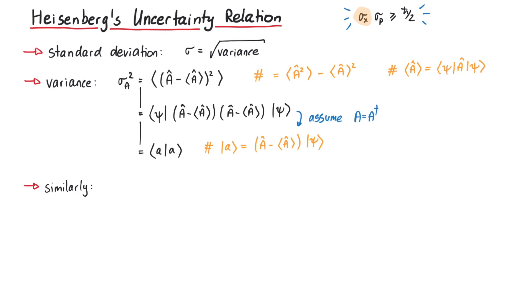Similarly, for some other Hermitian operator b, we can write its variance as the bra-ket product of some state b, which is defined like this.